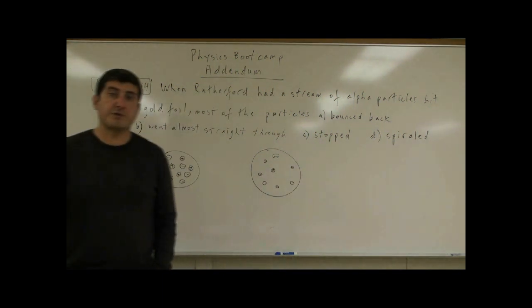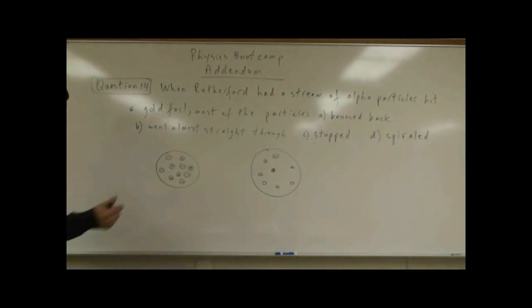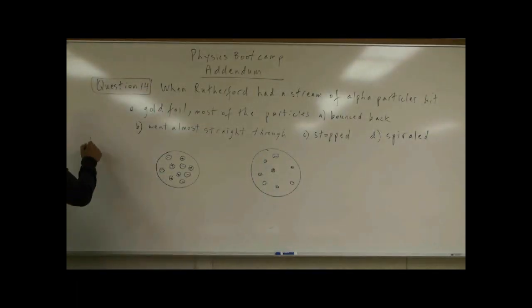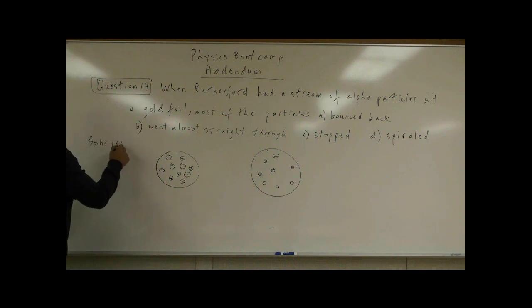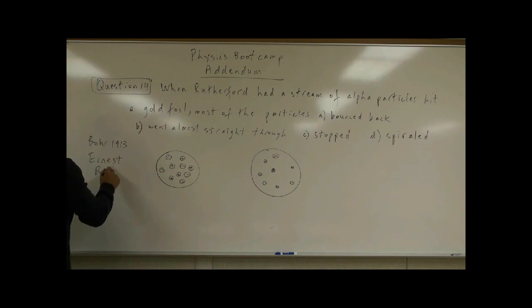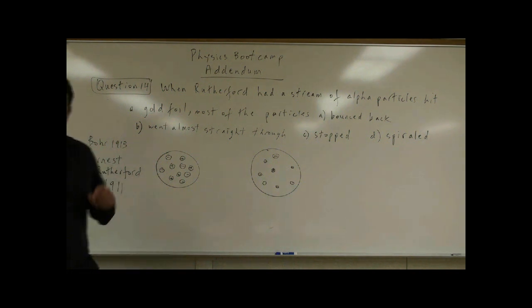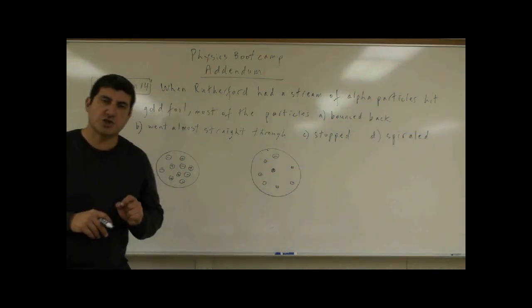Rutherford's experiment was done in 1911, several years before the development of the Bohr model of the atom, which was developed in 1913. So what Rutherford did was he shot alpha particles at a gold foil.